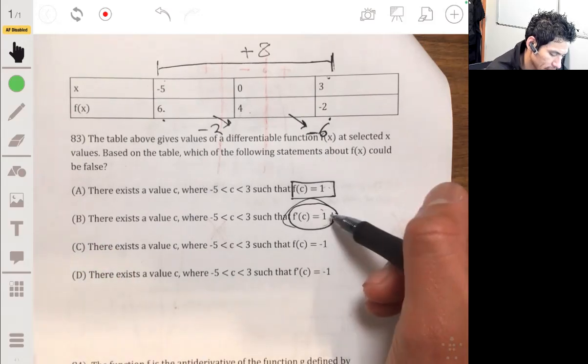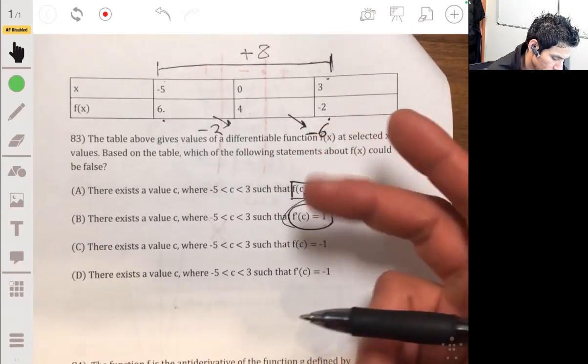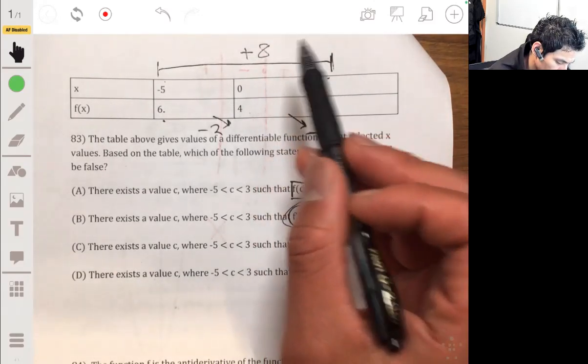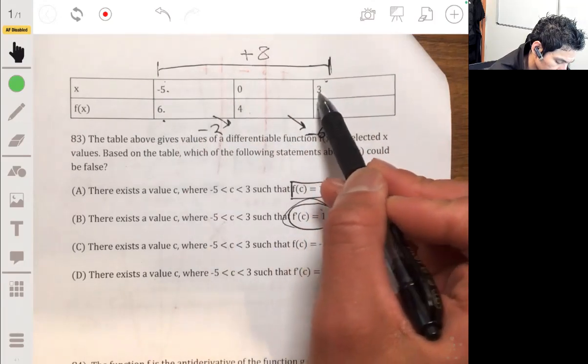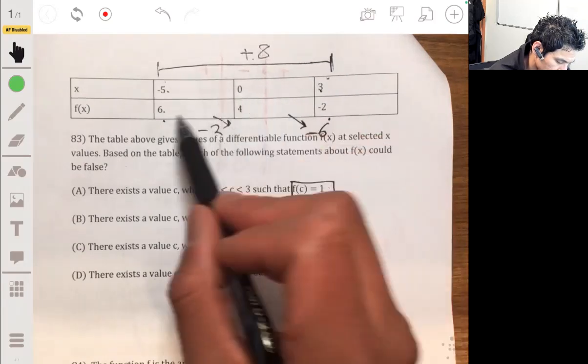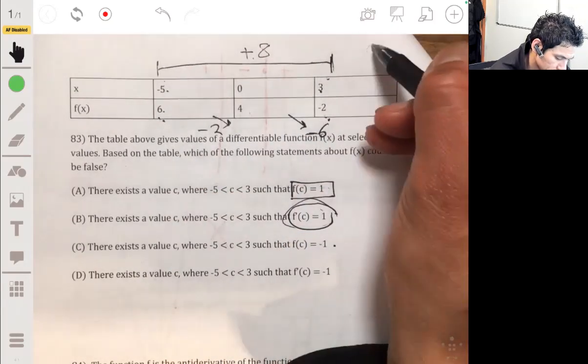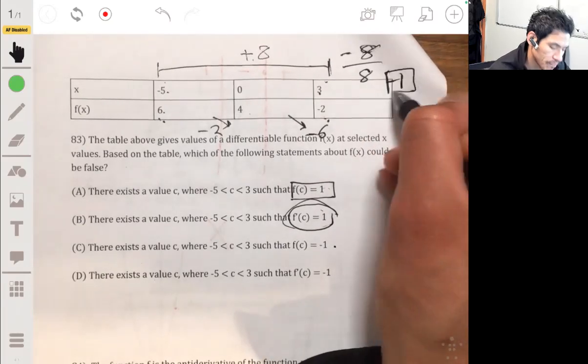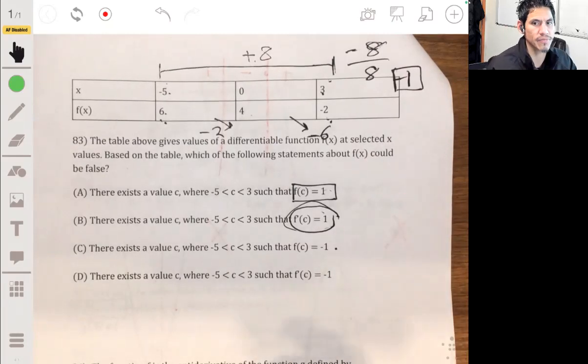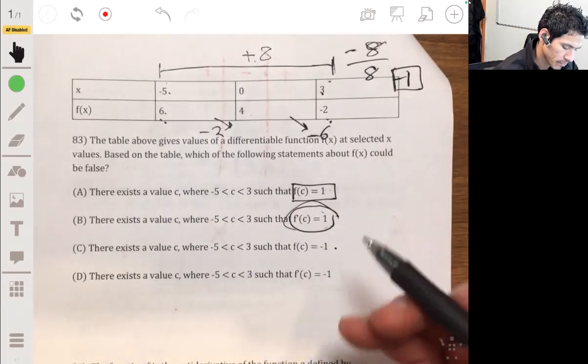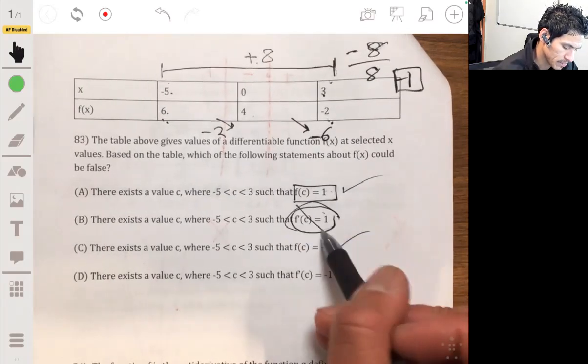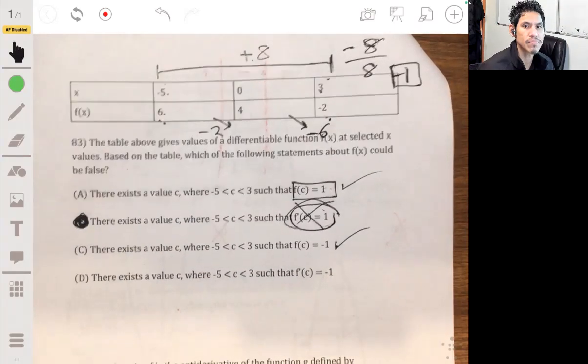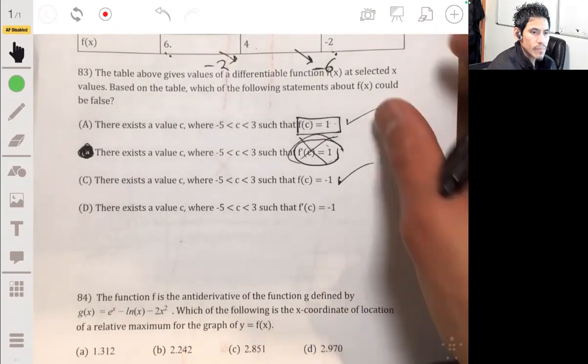I think they're trying to confuse you with C because what we know is that if it goes from across this interval, when it goes from negative five to three, it increases by eight, and then it goes from six to negative two and decreases by eight. So you have negative eight over eight, which means it goes down by negative one. So there has to be at least a value such that you can find a slope of negative one. So C could be possible, but B is going to be our answer.